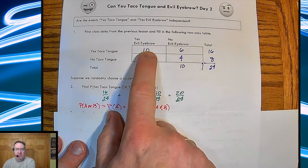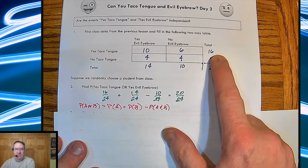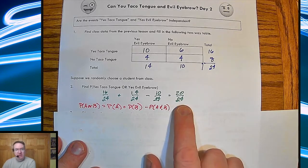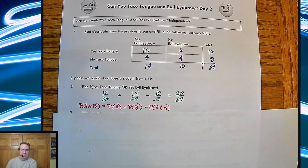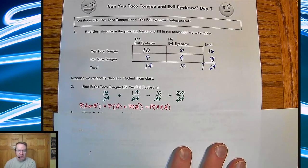14 out of the 24 can do evil eyebrow. And then we have to take off the intersection, because these 10 people are counted in both the 14 and the 16. So that's going to give me 20 out of 24.